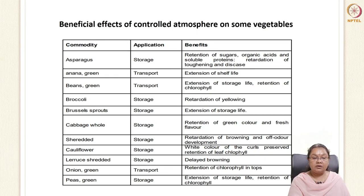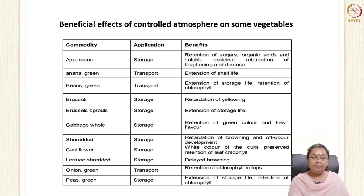The beneficial aspects of controlled atmosphere include extended storage life for asparagus, retaining sugars, organic acids, and proteins, and retarding toughening. Similarly, pigments can be retained in green beans, yellowing can be retarded in broccoli, storage life can be extended for Brussels sprouts, and cabbage retains its green color and fresh flavor. All these benefits occur only when the conditions are maintained as discussed, and packaging plays an important role in maintaining that controlled atmosphere.